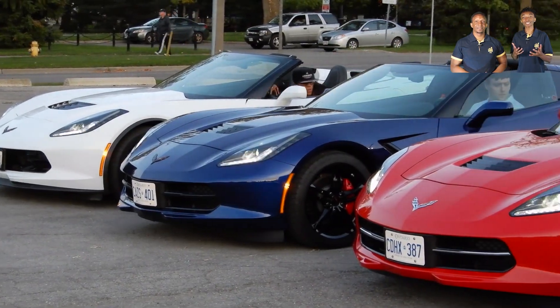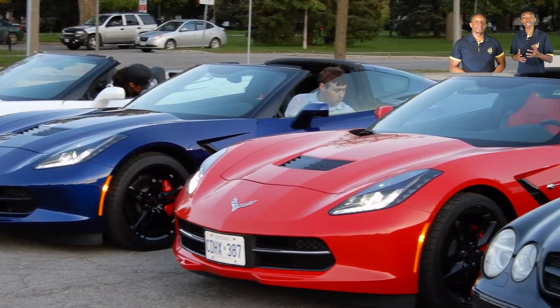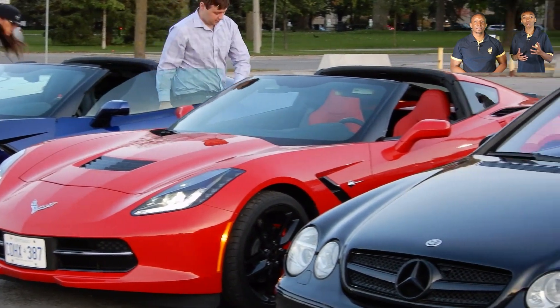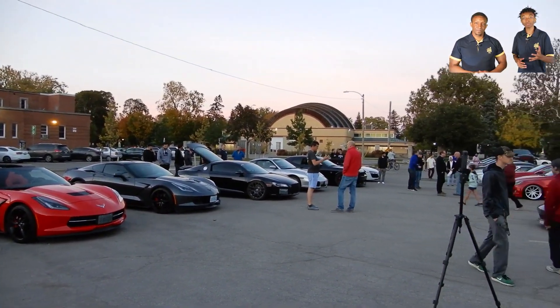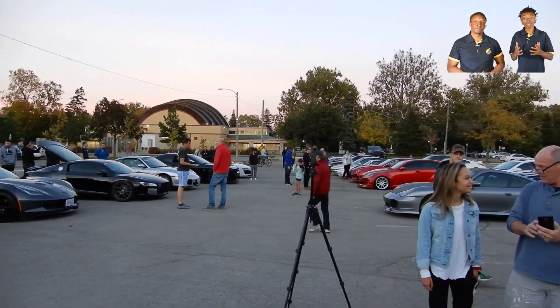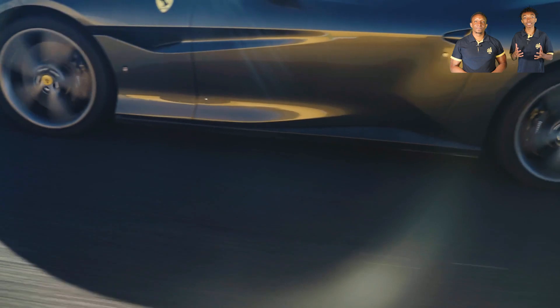Bugattis, Koenigseggs, Lamborghinis, Ferraris, Aston Martins, McLarens - what do all these cars have in common? Speed, speed, and more speed. We'll explain why these cars are so popular and why some people line up to spend millions of dollars to buy these cars in today's video.